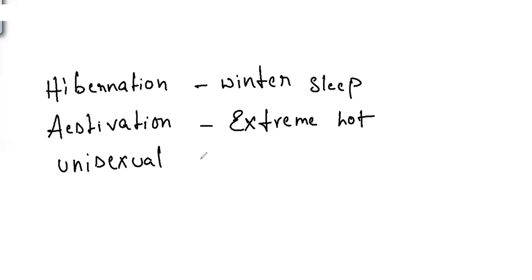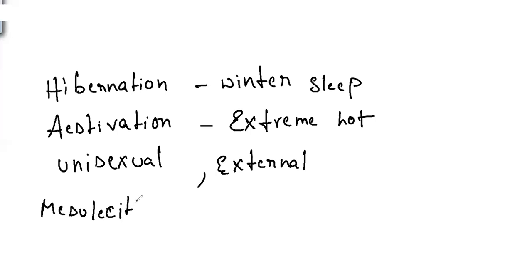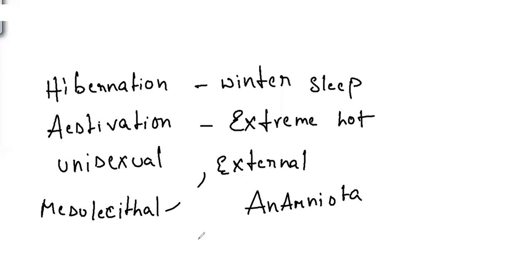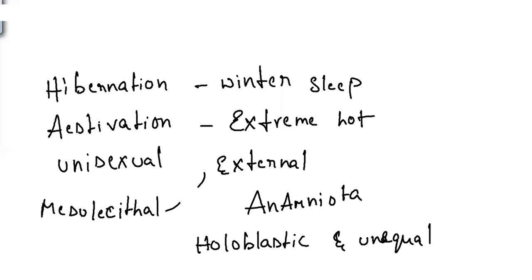Amphibians are unisexual (dioecious). Males lack copulatory organs. These animals return to water from land only for reproduction. Fertilization is external and happens in water. They are oviparous, laying eggs in water. The eggs are mesolecithal — having medium-sized yolk. Extra-embryonic membranes such as amnion and chorion are absent, placing them under the group Anamniota. Cleavage is holoblastic and unequal. Development is indirect, with the tadpole larva stage.